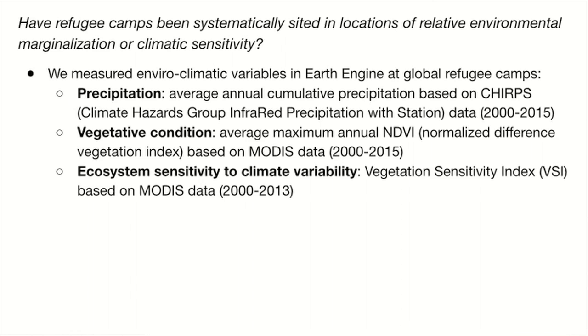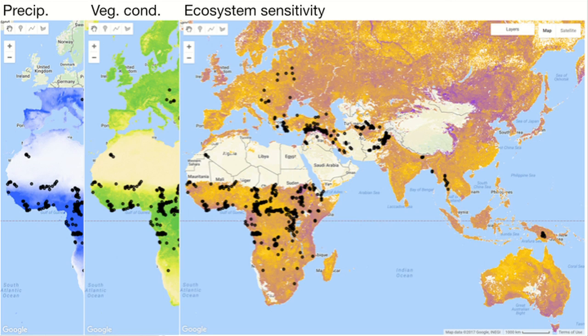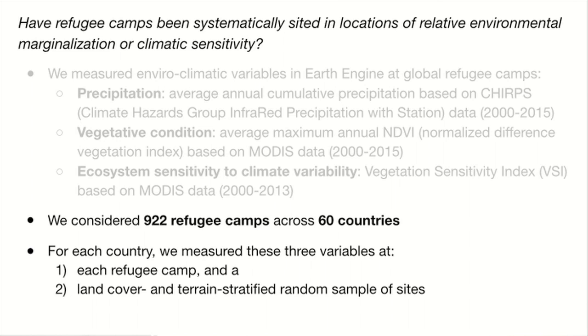I'm going to be talking about three different variables we're looking at to assess this: precipitation, vegetative condition, and ecosystem sensitivity to climate variability, which is published in Nature by Seddon et al. in 2016. So we have precipitation from CHIRPS, vegetative condition from MODIS, and then we have VSI represented here. We study these at 922 camps across 60 countries, and we basically compare what we see at the refugee camps to a random sample within each country. Here's our country-by-country stratified random sample distribution.